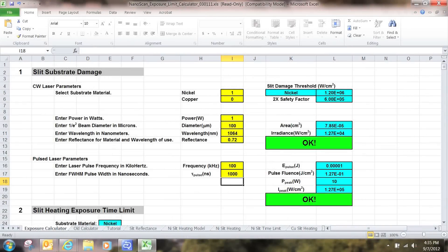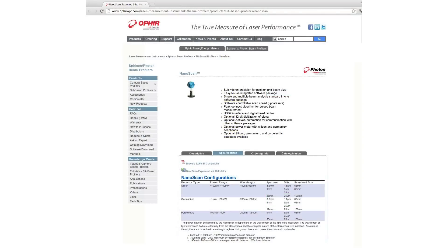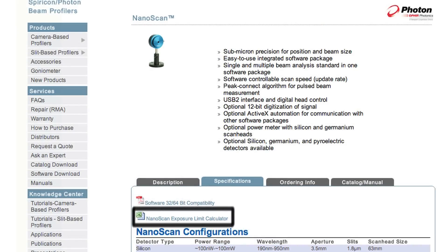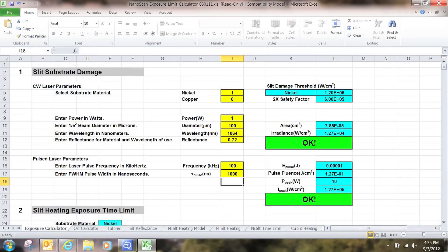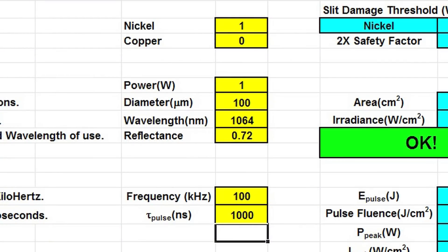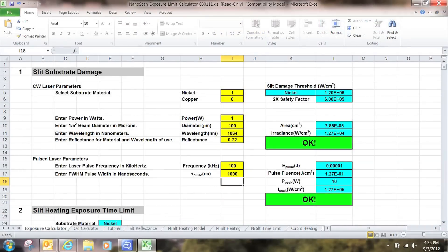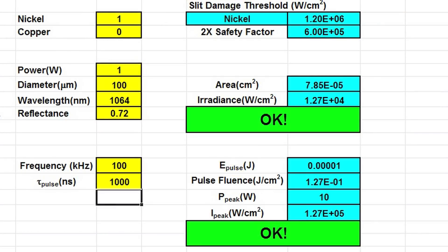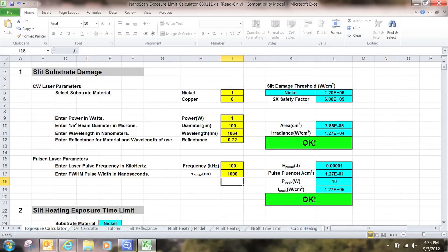In addition to the operating space charts, there's also a nanoscan exposure limit calculator. This is an Excel spreadsheet available off the Ophir Spiricon website that you can use to enter the parameters of your laser and of the nanoscan that you're using, and it will compute whether you're in a safe operating range or a cautionary range or outside of the safe operating range of that particular nanoscan.